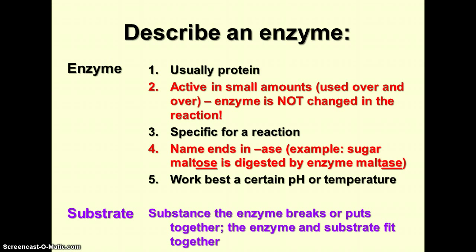Remember, enzymes are usually proteins. They are active in small amounts because the enzyme can be used over and over since it is not changed in the reaction. Enzymes are specific for the reaction they catalyze. Their names generally end in -ase, and they work best at a certain pH or temperature. pH changes and temperature changes can lead to denaturation of the protein, which changes the shape irreversibly. If the shape is changed, it doesn't work anymore because the substrate and the enzyme fit together like pieces of a puzzle.